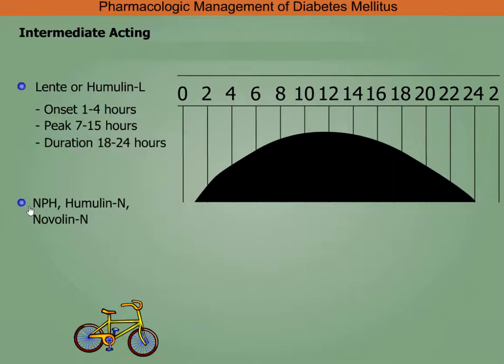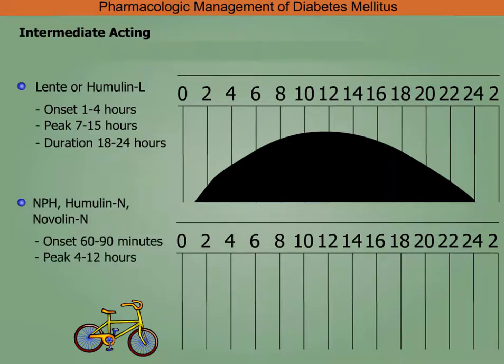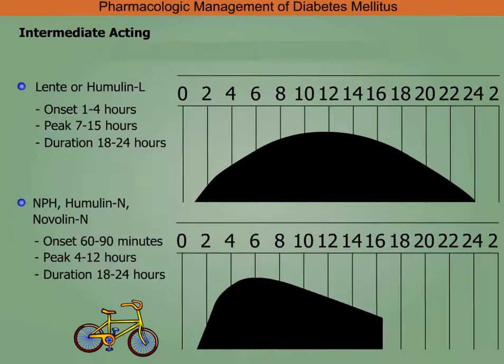NPH (Humulin N and Novolin N) has an onset in 60 to 90 minutes and peaks in four to 12 hours.